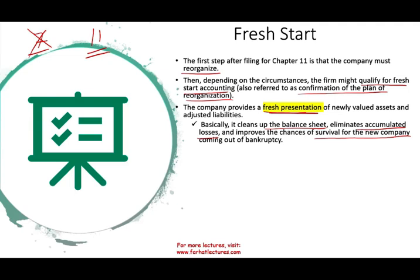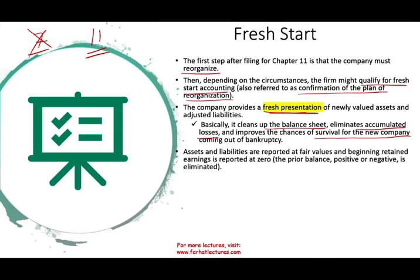For example, when GM got out of bankruptcy, they made sure they got out of the union contract, which helped them tremendously, among many other things including restructuring their debt. Once the company emerges freshly, assets and liabilities are reported at fair value, and beginning retained earnings are reported as zero.